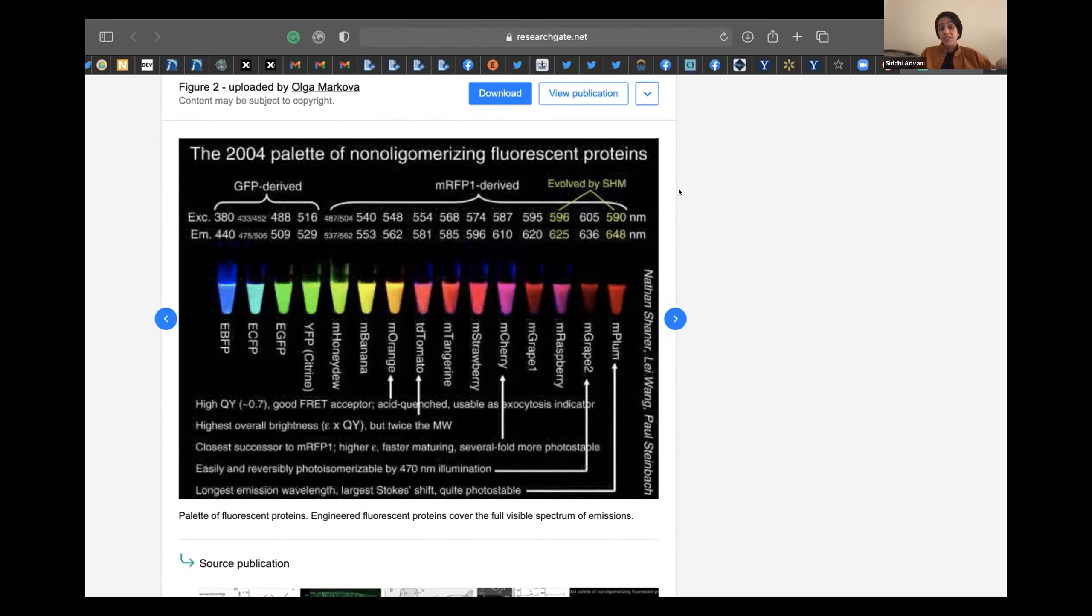So yeah, there are lots of really cool fluorescent proteins that have been derived from GFP and then RFP that were found. Yeah. That was sort of it that I wanted to add. Cool. Thank you. Are there any questions related to this?